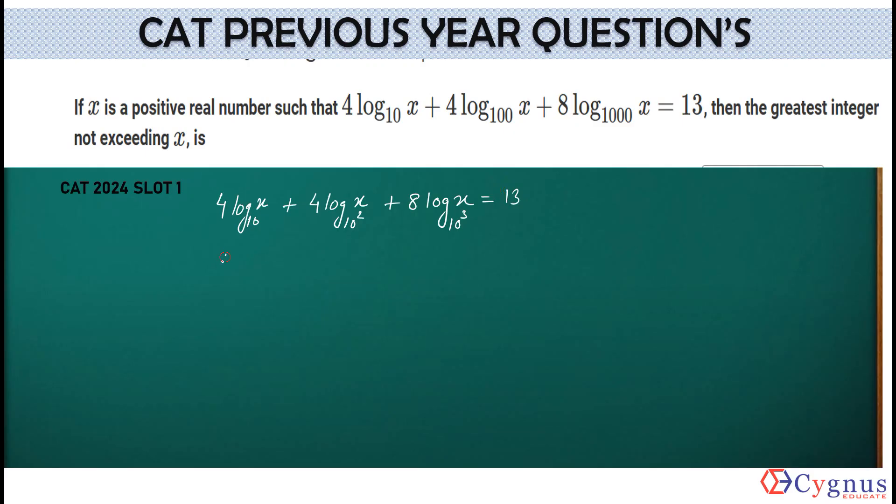If you try to rewrite this equation using that property where the powers will come out, this is 10. Here the power is 2, here the power is 1. So, this will be multiplied 1 by 2 into 4 log of x to the base 10 here. The next one, this is 3, this is 1. So, I'll say 1 by 3 into 8 log of x to the base 10.